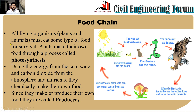What do we mean by food chain and food web? All living organisms — plants and animals — must eat some type of food for survival. Plants make their own food through a process called photosynthesis, using energy from the sun, water, carbon dioxide from the atmosphere, and nutrients to chemically make their own food. Since plants produce their own food, they are called producers.